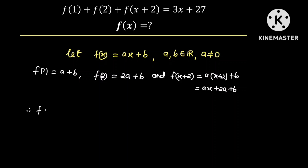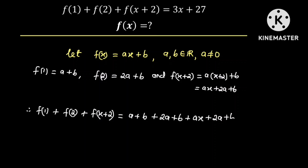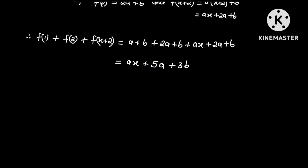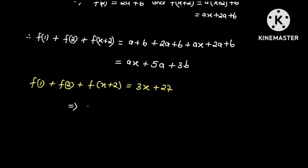Therefore, f of 1 plus f of 2 plus f of x plus 2 is equal to a plus b plus 2a plus b plus ax plus 2a plus b, which simplifies to ax plus 5a plus 3b. But recall that f of 1 plus f of 2 plus f of x plus 2 is equal to 3x plus 27. And so this implies that ax plus 5a plus 3b is equal to 3x plus 27.